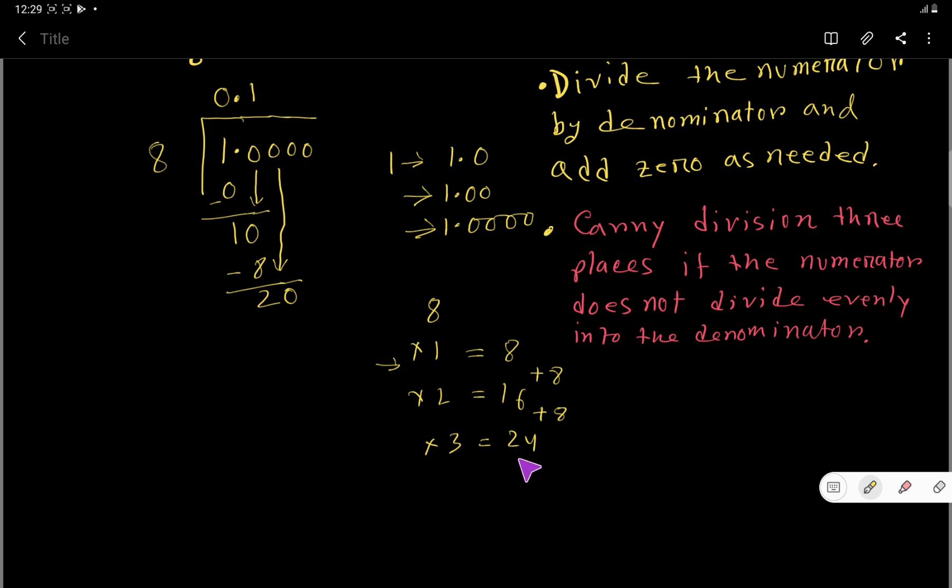That is, if you add here, 8, 16 plus 8 is 24. 24 is greater than 20, so you have to stop here. 8 times 2 is 16. So you have to write here 16. Now subtract—4. Now bring down this third zero.